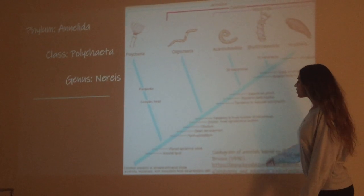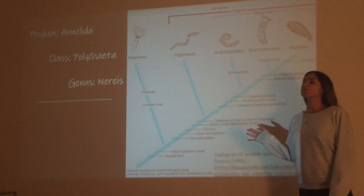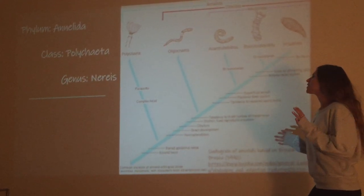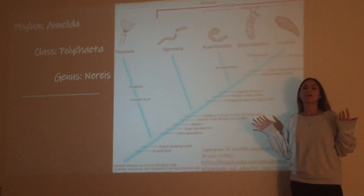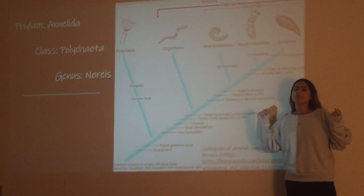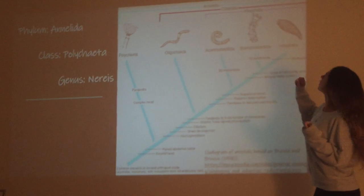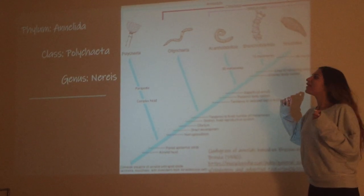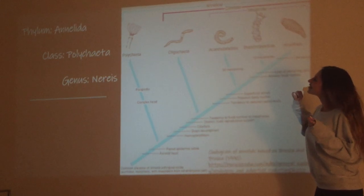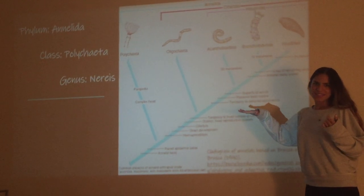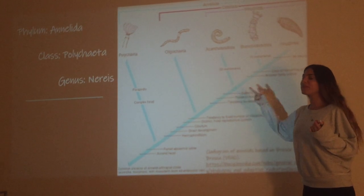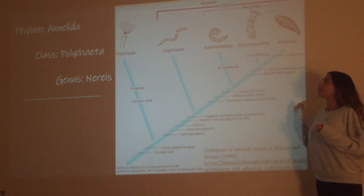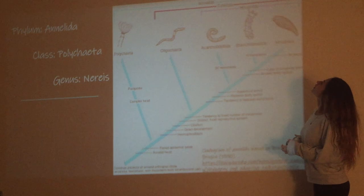To understand where the Nereus polychaete comes from, we have the phylum Annelida, which is basically where you will find all the segmented worms. Then we have the class Polychaeta, which is basically where Nereus is found. Annelida also has the class Oligochaeta and Hirudinea.